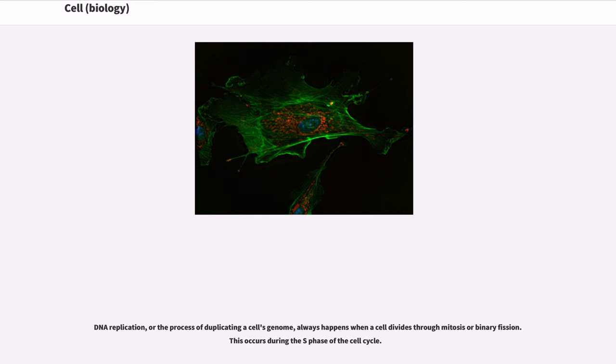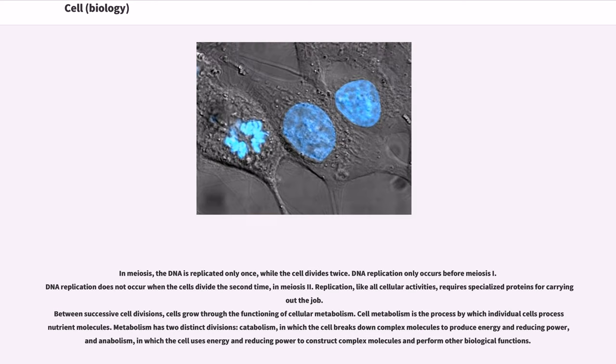DNA replication, or the process of duplicating a cell's genome, always happens when a cell divides through mitosis or binary fission. This occurs during the S phase of the cell cycle. In meiosis, the DNA is replicated only once, while the cell divides twice. DNA replication only occurs before meiosis I. DNA replication does not occur when the cells divide the second time, in meiosis II.